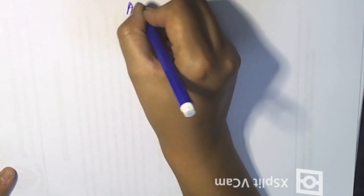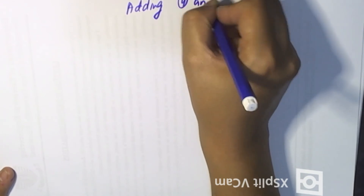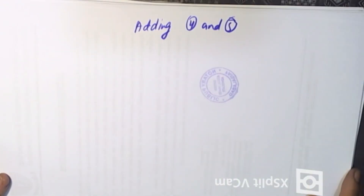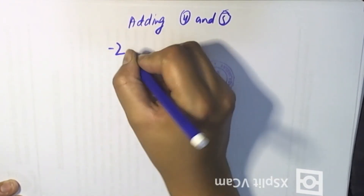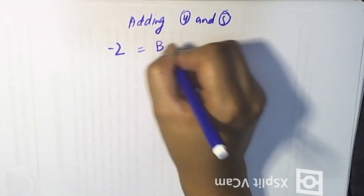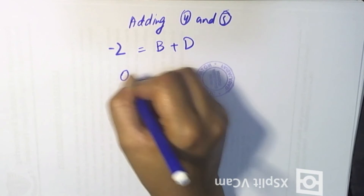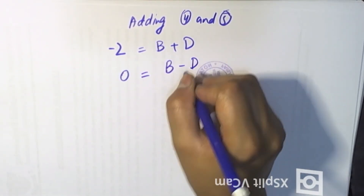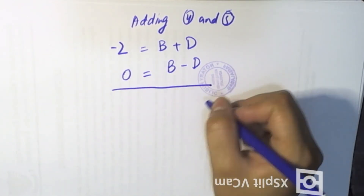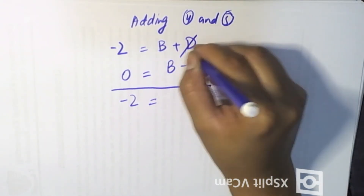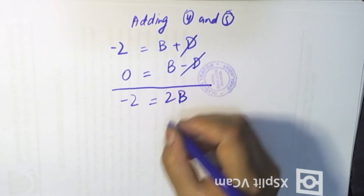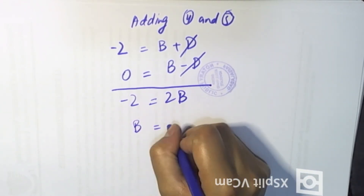The next step is adding equations 4 and 5. We will add equations 4 and 5. Minus 2 is equal to D. So minus D — from equations 4 and 5, adding gives minus 2 is equal to plus and minus D cancelling out.